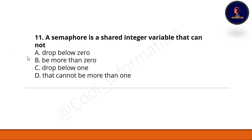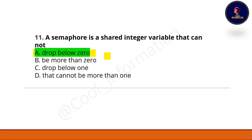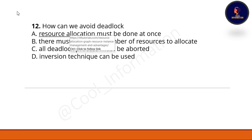Question 11: a semaphore is a shared integer variable that cannot — Option A: drop below zero. Option B: be more than zero. Option C: drop below one. Option D: be more than zero. The correct option is A — a semaphore cannot drop below zero.